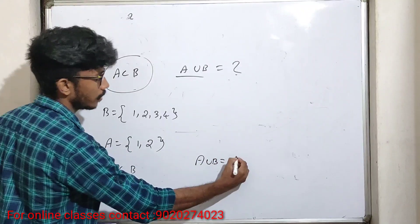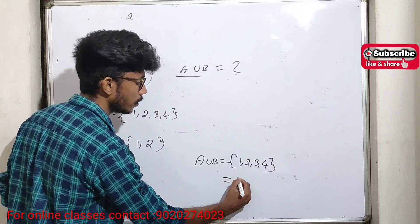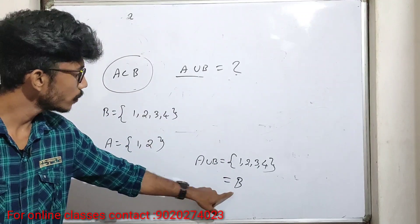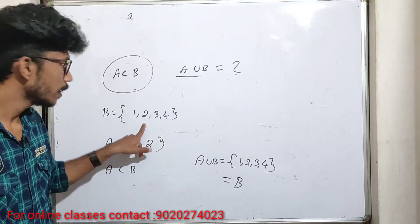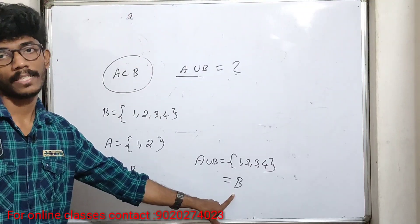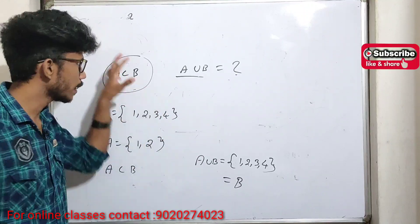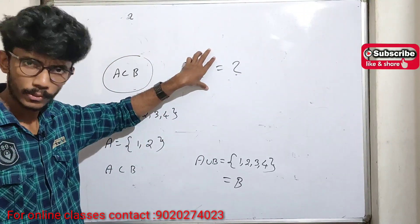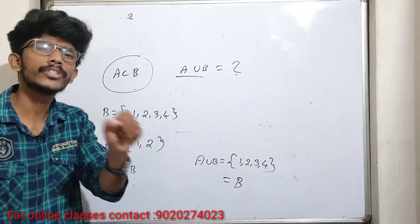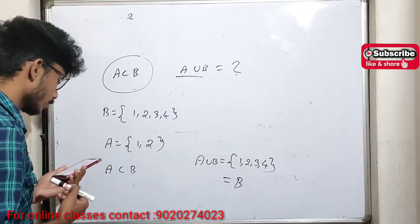A and B are elements one, two, three, four. A and B is equal to B. A is the substitute of B, and A union B equals R, which is B. We have a condition here: A and B are the one, B and B are the one. Okay, we have a next question.